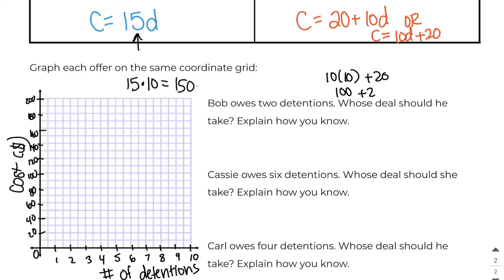For the principal, the initial value is zero. Plotting points: zero detentions is $0, one is $15, two is $30, three is $45, four is $60, and so on. Connect the points with an arrow — that's the principal's line. For the vice principal, starting at $20: one detention is $30, two is $40, three is $50. Connect those points — that's the vice principal's line.